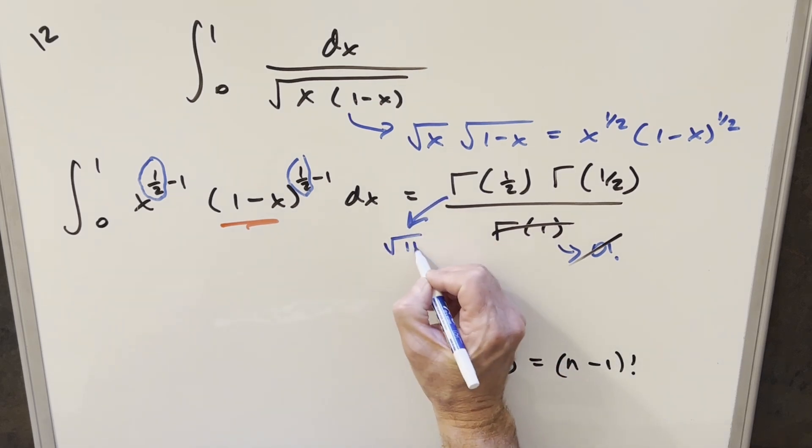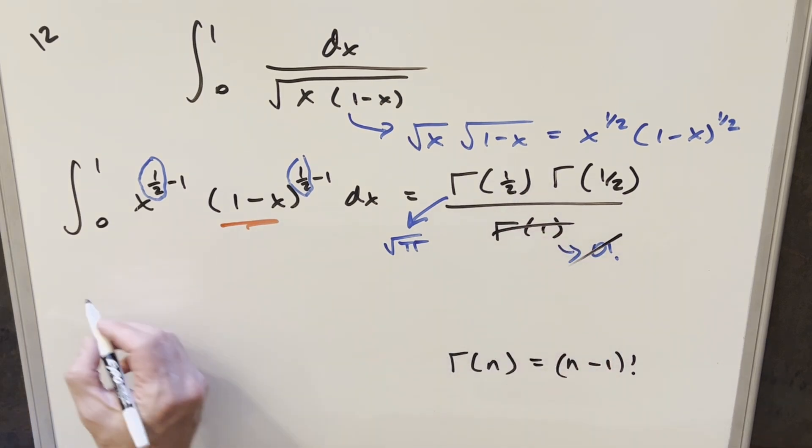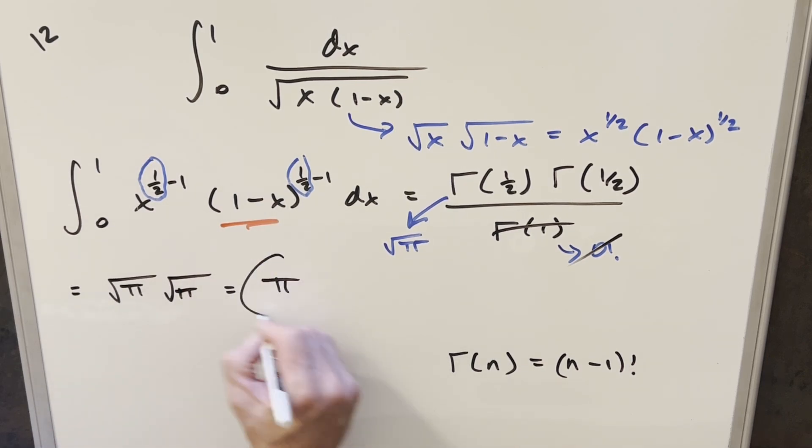And then what I like to do is kind of memorize a value for gamma of 1 half. This is going to be the same thing as just square root of pi. So since we're multiplying it together, what we're going to end up with here is just square root of pi times square root of pi, or square root of pi squared. And so for my solution to this, we just get pi.